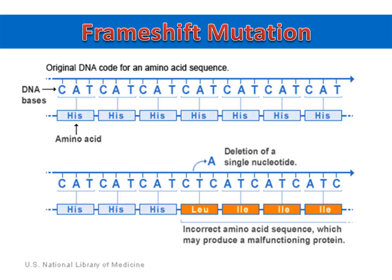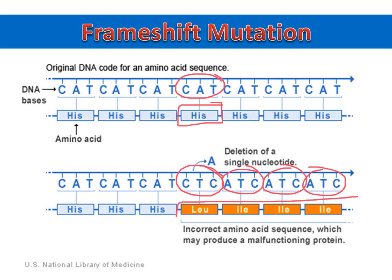You can see in the original DNA strand that all of the codons are CAT, which codes for the amino acid histidine. But if a single nucleotide is deleted, the reading frame shifts, causing all of the codons to change. This results in incorrect amino acids being added to the protein.